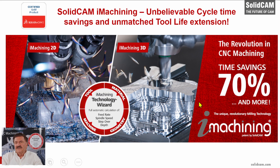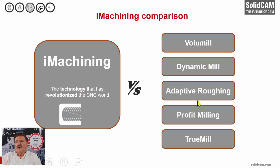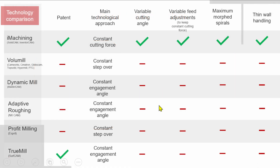One more important thing about iMachining — all our competitors say they have something similar, but nobody has anything truly like iMachining. Volume Mill is licensed by many CAM competitors; Dynamic Mill is MasterCAM; Adaptive Clearing is EnixCAM; Profit Milling is Esprit; and 2Mill is ServCAM. Let's see where iMachining excels against these imitators. iMachining has seven patents. 2Mill also has a patent, but 2Mill and ServCAM are nearly out of the market today — they were bought and sold several times and now Hexagon owns them. The main technological approach of iMachining is constant cutting force.